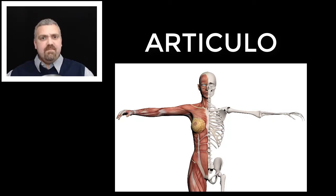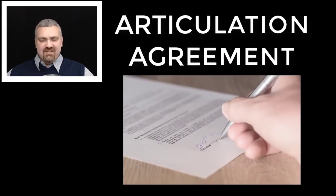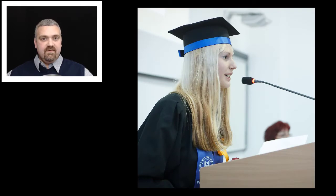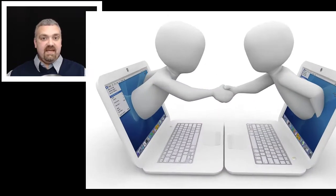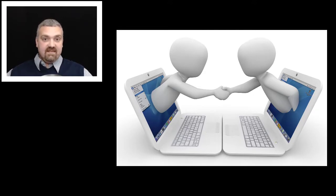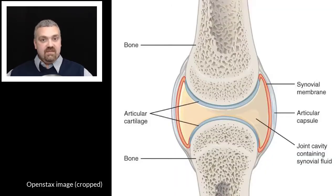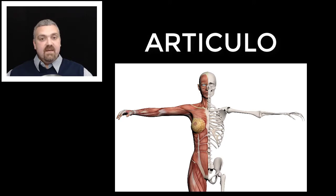Next we have articulo, which still means joint but a little deeper — it means joint both structure and function. The first example that comes to my head is an articulation agreement. I work at colleges, and articulation agreements are when two colleges decide to work together for the benefit of students — if you take these classes here, we'll accept them over there. Another example would be your articular cartilage. All of your long bones are lined with hyaline cartilage called articular cartilage — the cartilage that lines the ends of your bones that form joints. So articulo means joint, both structure and function.